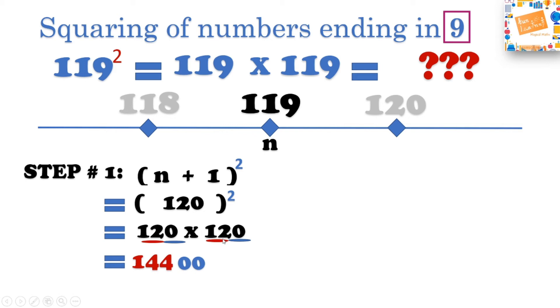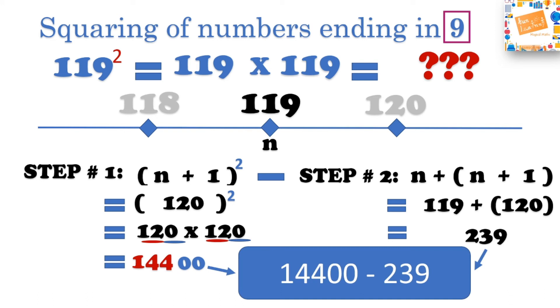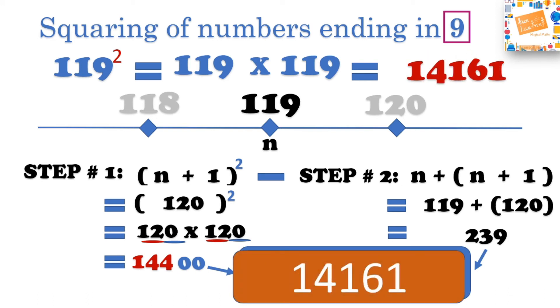Now let's look at step 2. Step 2 is adding n to n plus 1, that is 119 added to 120, the number just after it, which gives us 239. Now you know the drill, it is just to subtract step 2 from step 1, which is 14400 minus 239, which gives us 14161. This is the answer. Try it on the calculator and verify it.